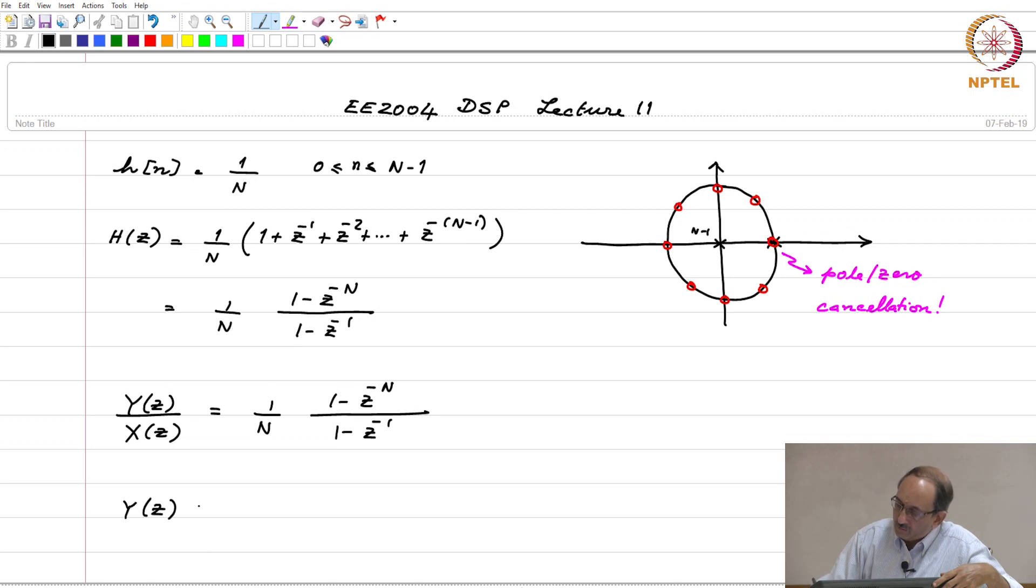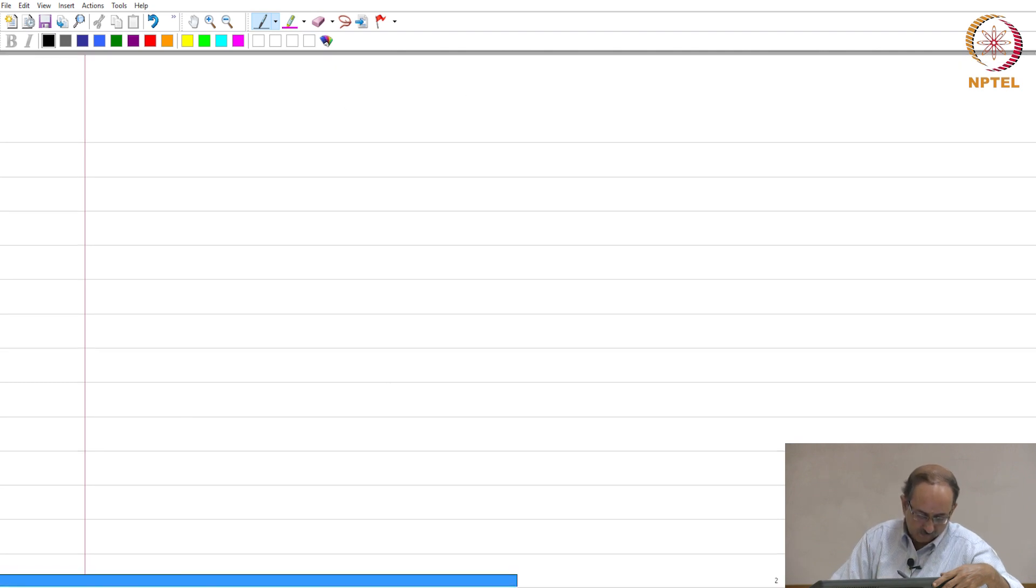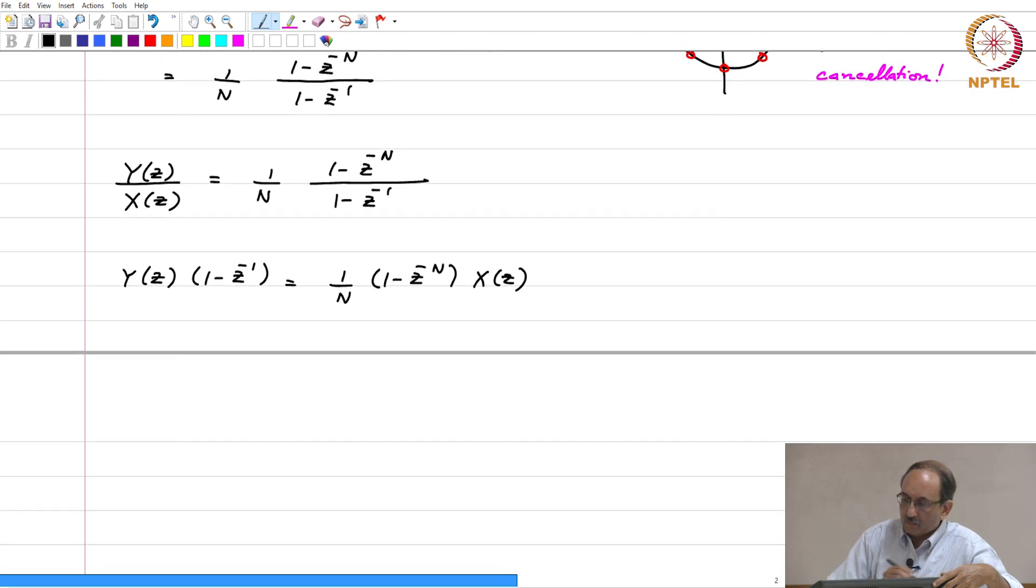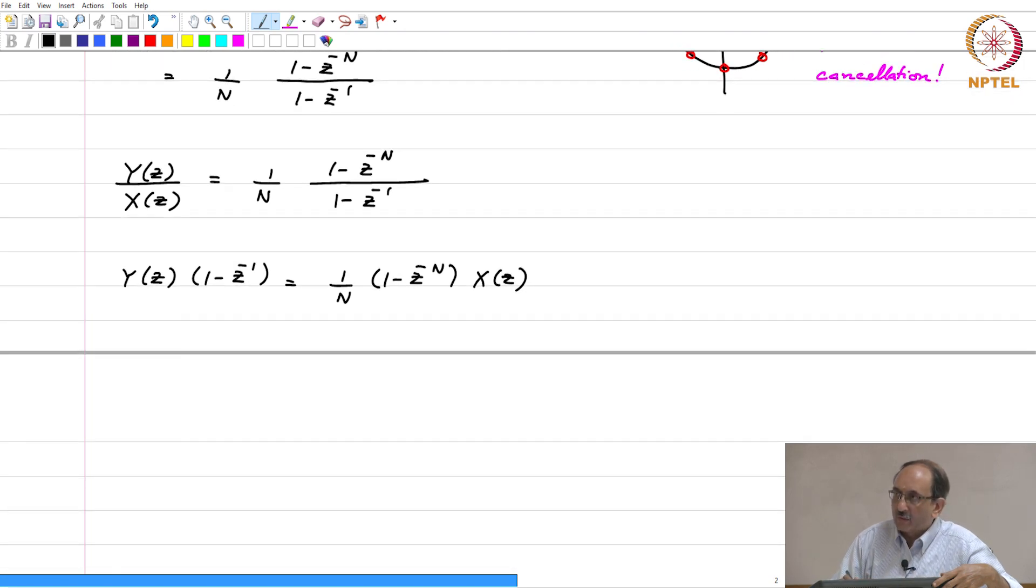If you cross multiply, you have this times x of z. After we are done with this, we are going to look at properties of z transform, and after linearity, the second property we are going to look at is the delay property.